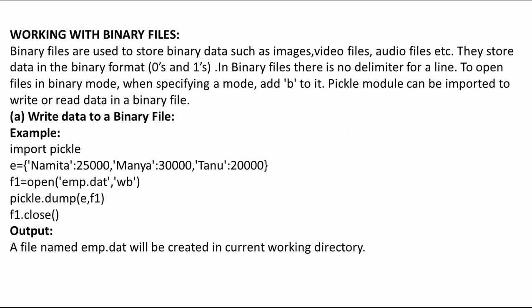Now let us talk about working with binary files. A binary file is used to store non-textual data — for example, images, video files, audio files, or data contained in lists, dictionaries, arrays, or tuples. Binary files store data in binary format, in terms of zeros and ones. Unlike a text file, there is no delimiter for a line in a binary file. In a text file, each line is delimited by a newline character (\n), but this is not the case in a binary file.